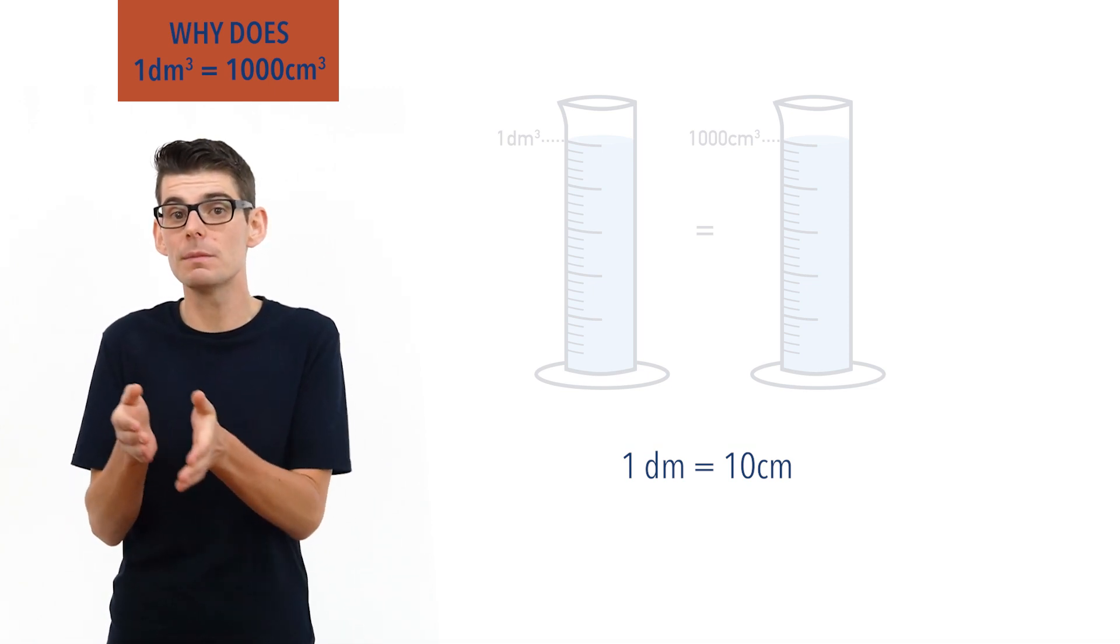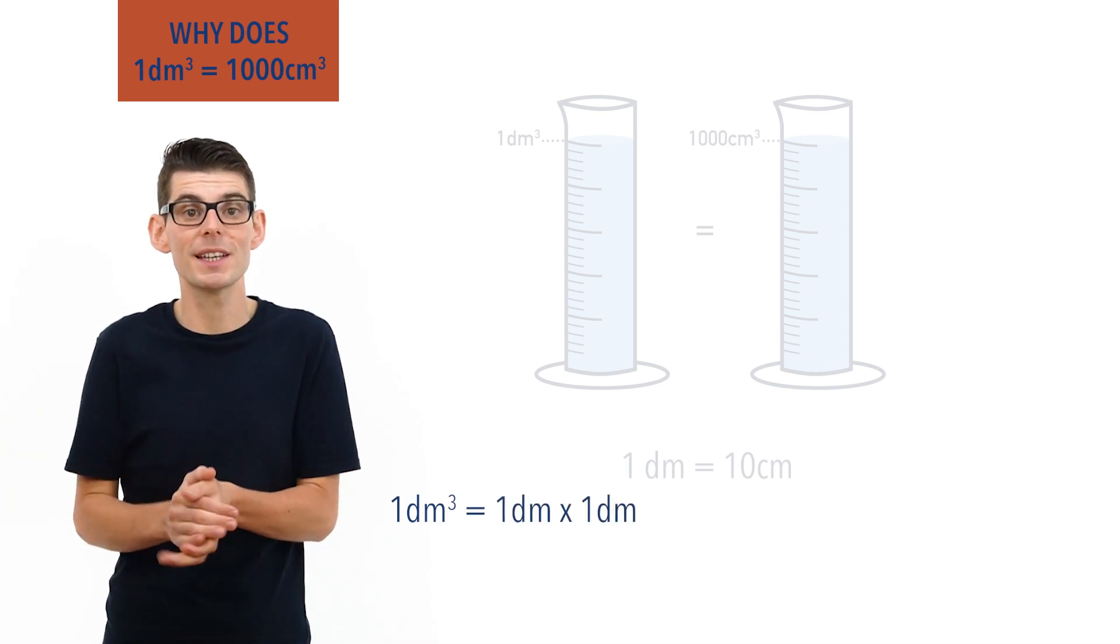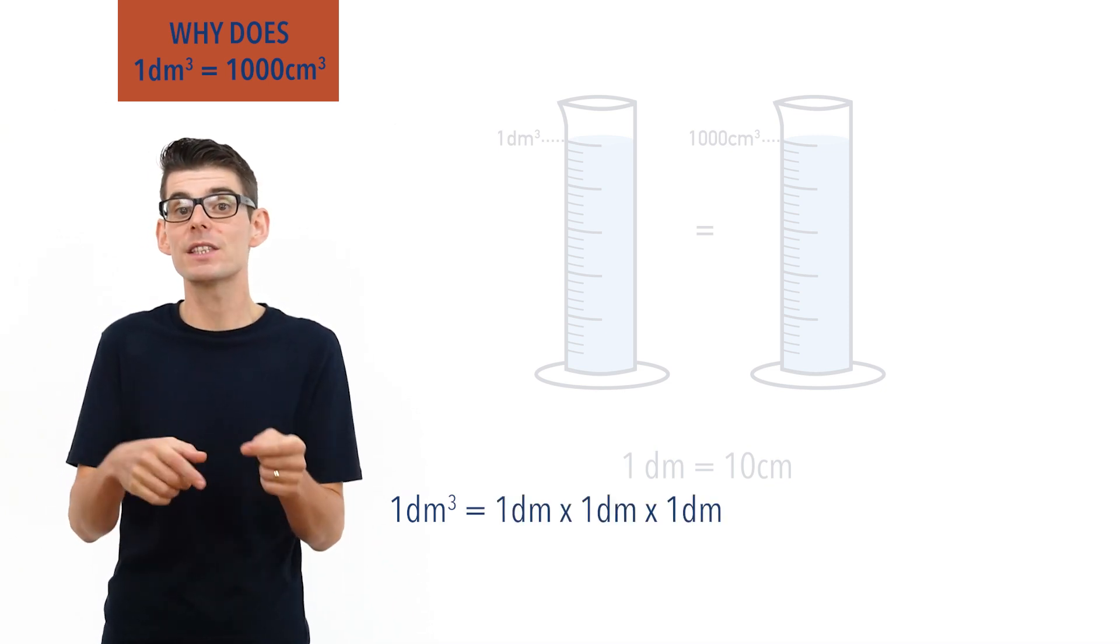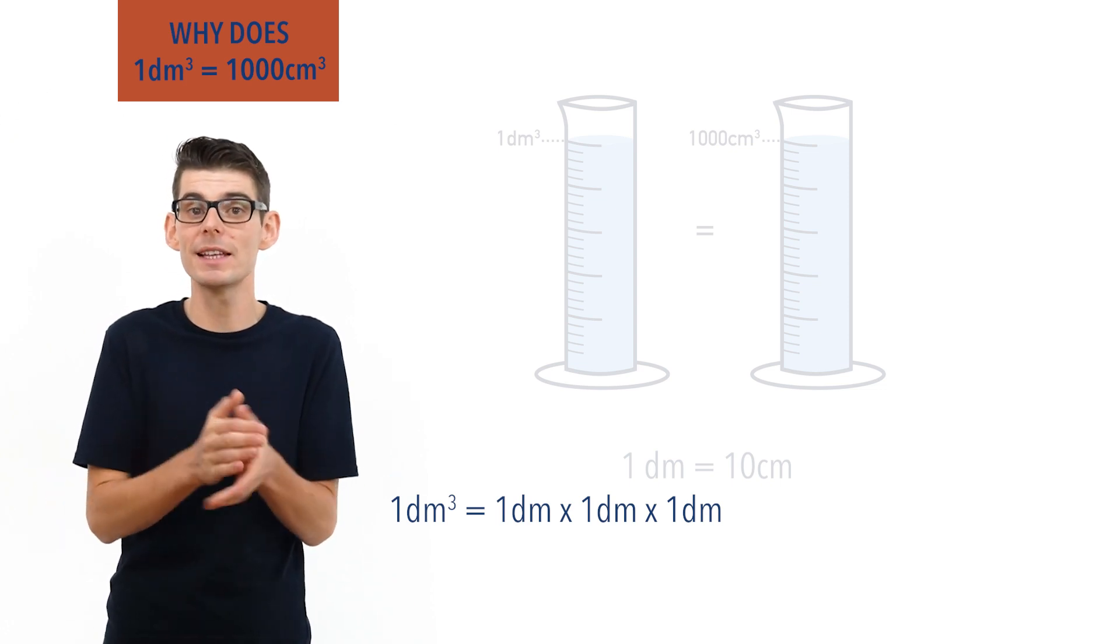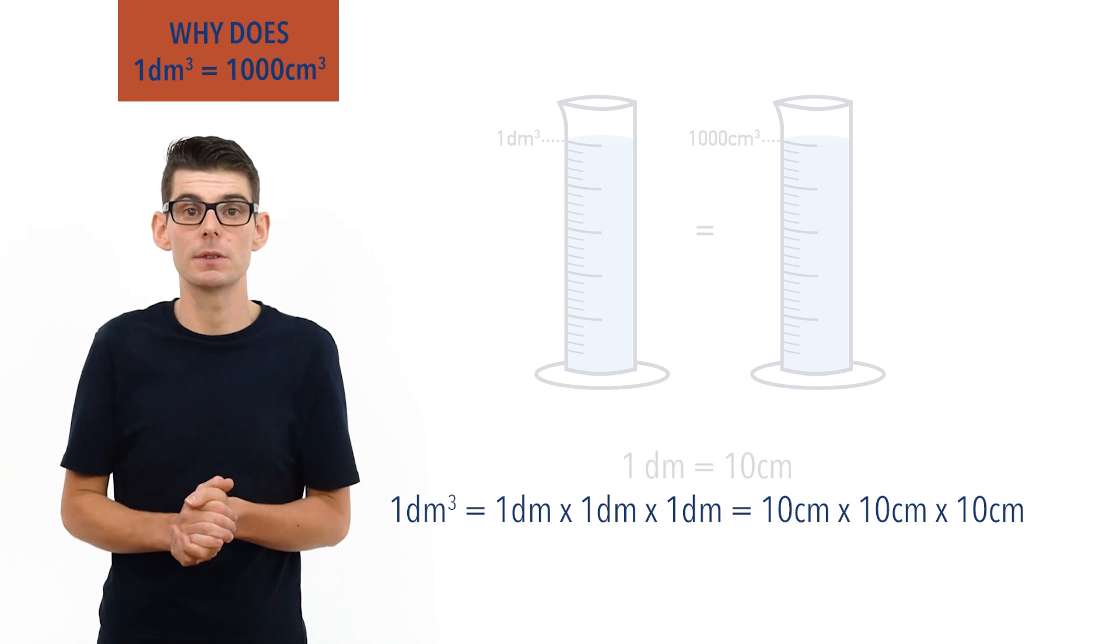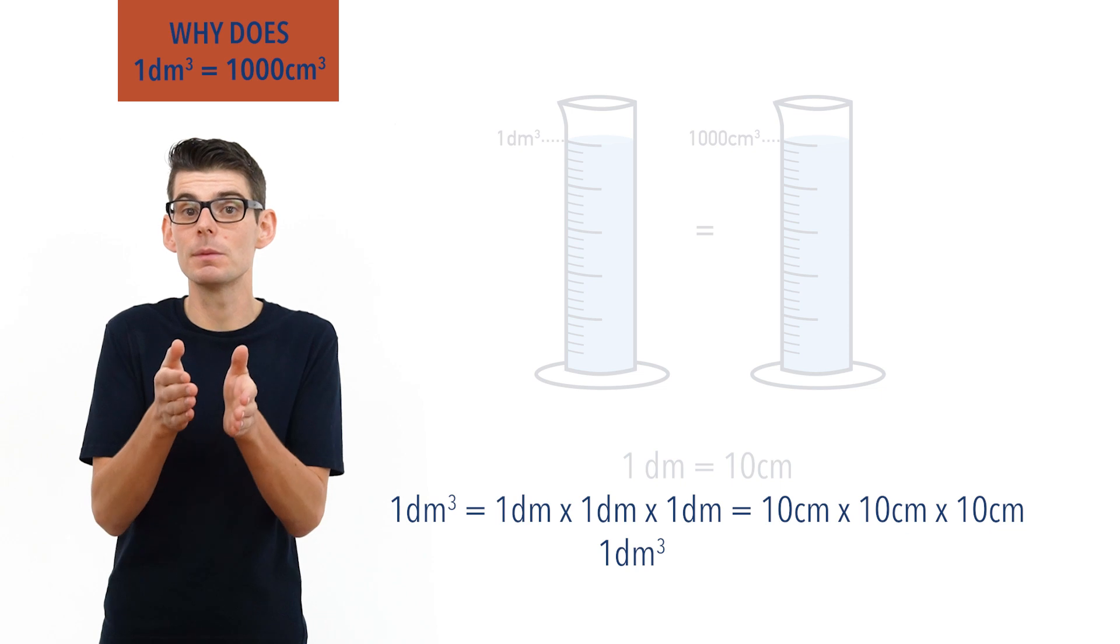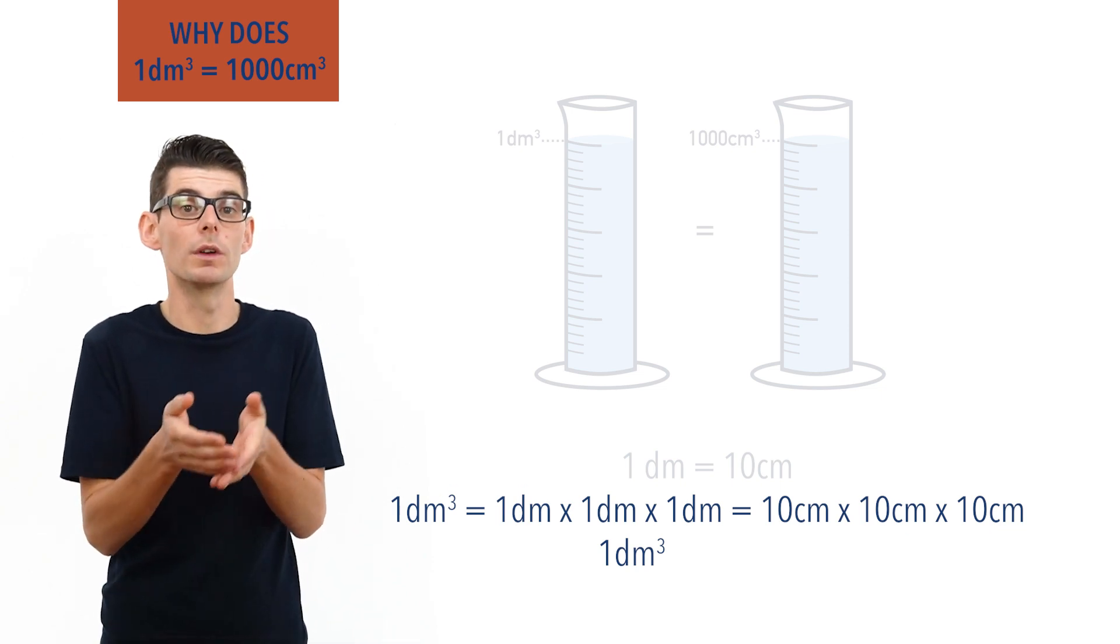Well, 1 decimetre cubed is the same as 1 decimetre times 1 decimetre times 1 decimetre. That's the same as 10 centimetres times 10 centimetres times 10 centimetres. 1 times 1 times 1 equals 1. However, 10 times 10 times 10 equals 1000.